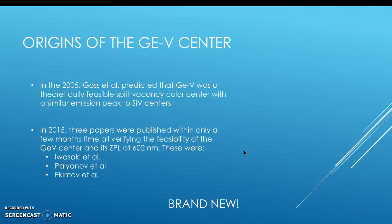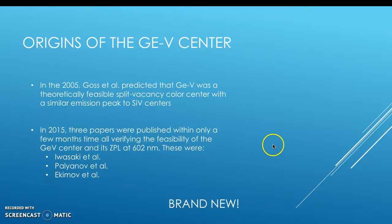The origins of the GeV center come from first-principles calculations by Goss et al., who predicted that the GeV center would have a split vacancy structure similar to silicon vacancy centers as well as a similar emission peak. In 2015, three papers were published verifying the feasibility of the split vacancy center and confirming the ZPL at 602 nm: the Iwasaki paper, the Pavlinov paper, and the Akamov paper. Importantly, all three were published within about the same month and used three different fabrication techniques. This field is only about a year and a half old.